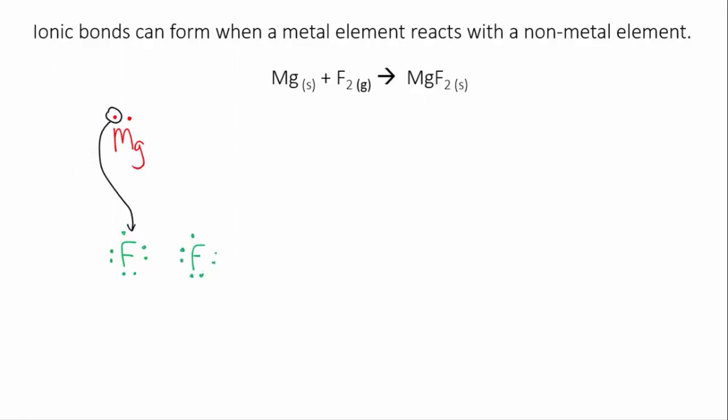Well, it can be taken up by a second fluorine atom. So the magnesium becomes a magnesium ion with a charge of plus two, and the two fluorine atoms become fluoride ions, each with a charge of minus one. And that's why the overall formula of this salt is MgF2.